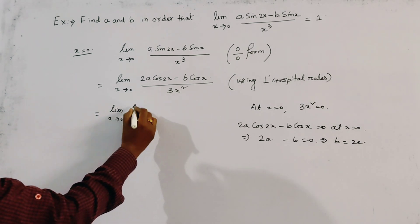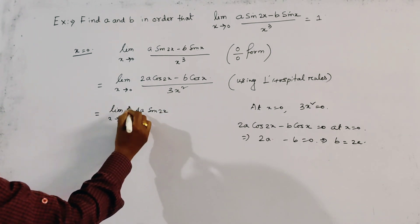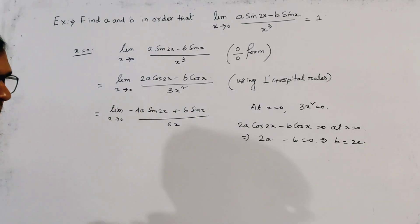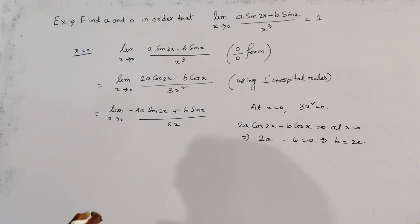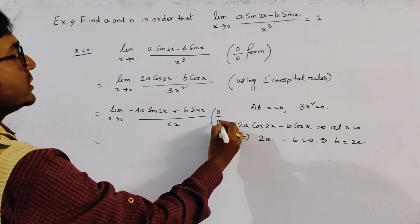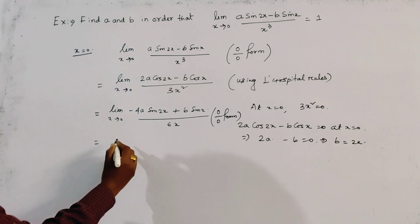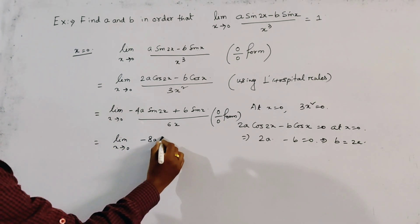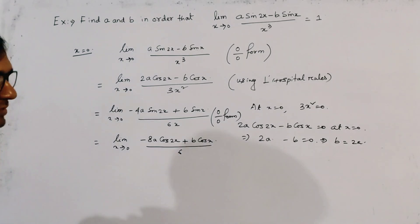We differentiate numerator and denominator again using L'Hôpital's rule, giving the limit as x tends to 0 of (minus 4A sin 2x plus B sin x) divided by 6x. Substituting x = 0, this is again of the form 0 by 0, so we apply L'Hôpital's rule once more, getting the limit as x tends to 0 of (minus 8A cos 2x plus B cos x) divided by 6.